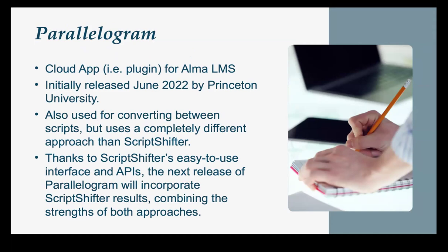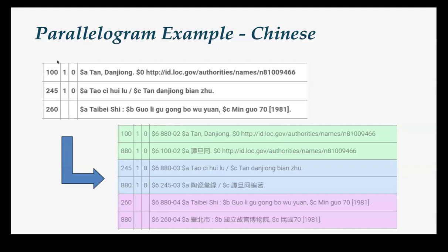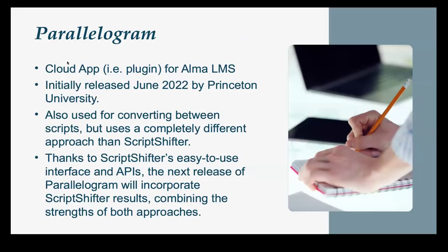Thank you, Stefano. So I'm going to talk about Parallelogram, which is another tool used for script conversion and one that very soon in a future version is going to benefit from all this great work that Stefano was just talking about. Parallelogram is a cloud app — basically a kind of plugin for the Alma library management system. It was originally released in June 2022 by Princeton University. It's also used for converting between scripts, but it takes a totally different approach than ScriptShifter. Rather than these approaches being conflicting or competing, they are two approaches that, when combined, can be something even more powerful than either one individually.